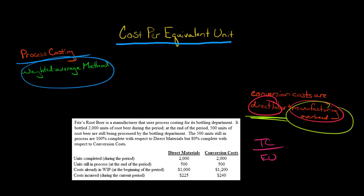We're going to have $1,225 divided by 2,500 units, and that comes out to $0.49 a unit. That's the cost per equivalent unit for direct materials.